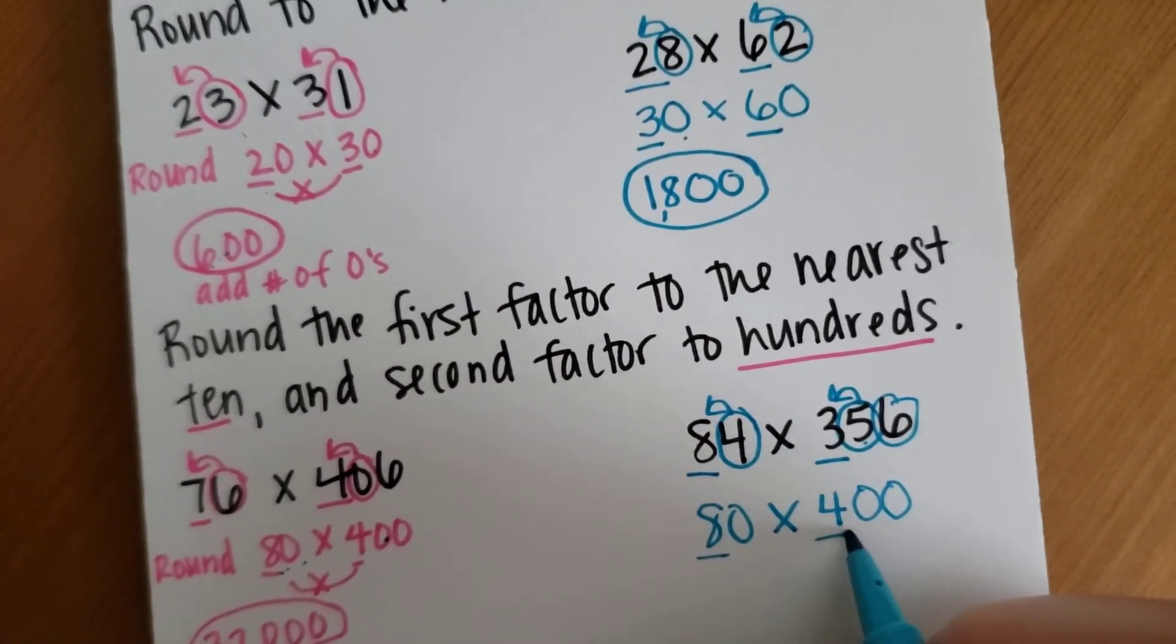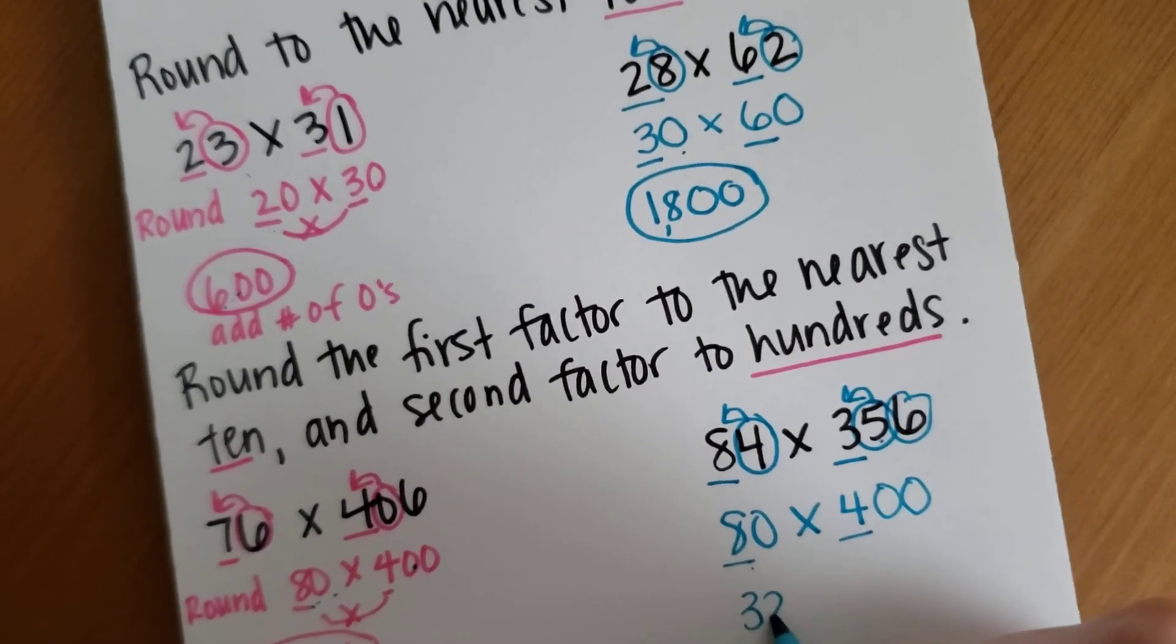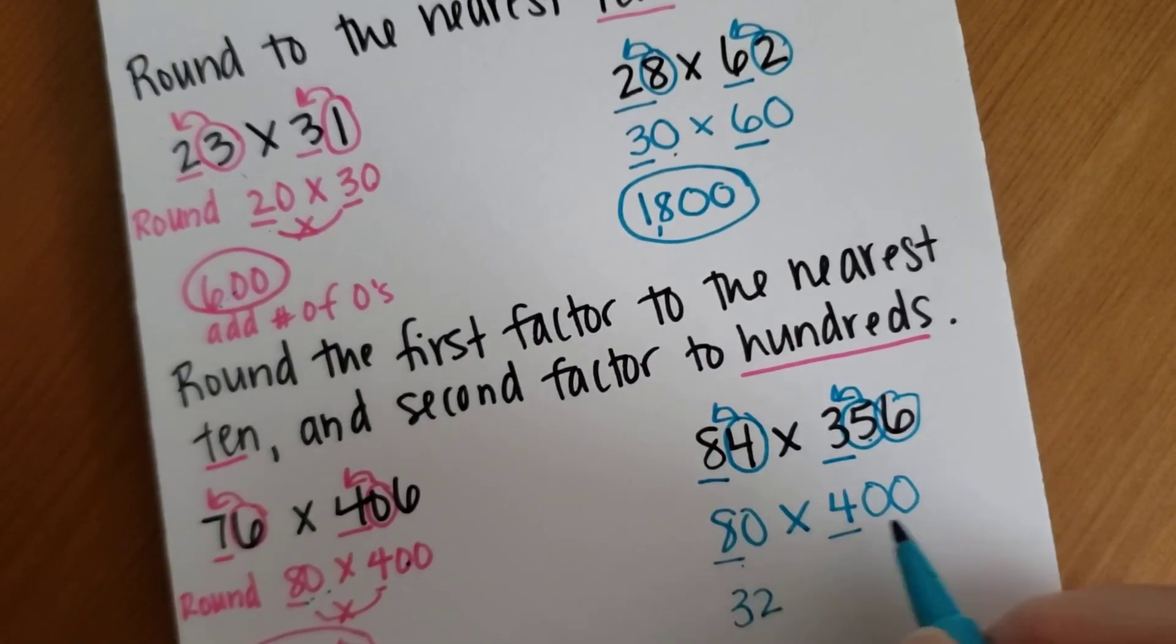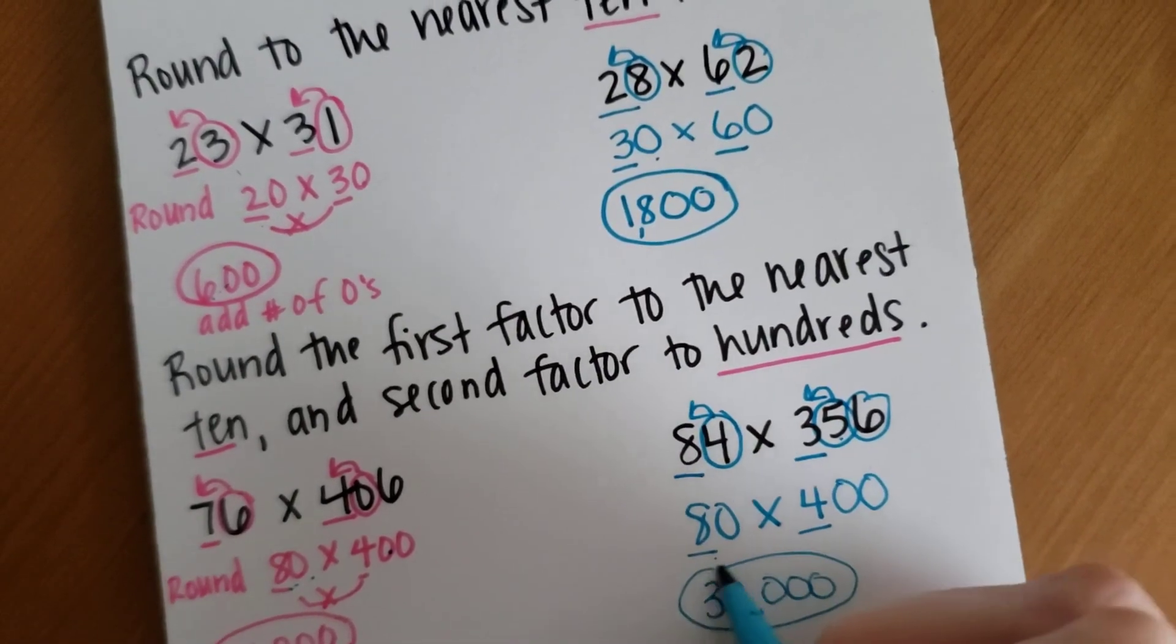I look at my front numbers. I'm going to do 8 times 4, which equals 32. And count how many zeros there are. 1, 2, 3. Add those in. And that is my answer for that one.